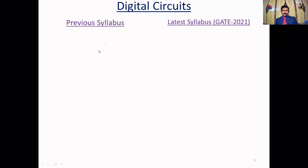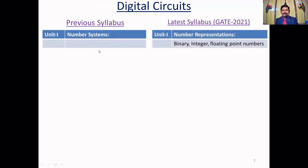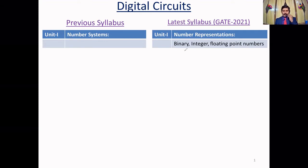In this lecture, let us see what topics changed in the digital circuits subject in the latest GATE 2021. In the first unit, previously number systems was there. Now they have included binary integer and floating point number representations as well. Binary representation covers the same basics: different number systems, their conversions.